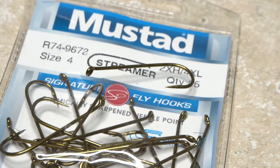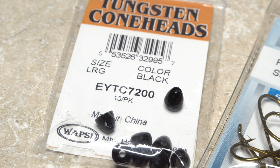For a hook and weight, it's go big or go home. Here I'm going to use a Mustad 9672 streamer hook in size 4 and pair it with a large black tungsten conehead. Different colored coneheads can of course be used as well.